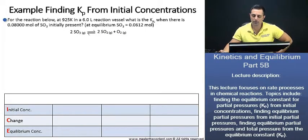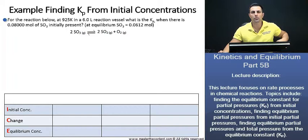Your career, our passion. In this reaction at 925 Kelvin in a 6-liter reaction vessel, what is the equilibrium constant for partial pressures when there is 0.08 moles of sulfur trioxide initially present? At equilibrium, the sulfur trioxide amount is 0.0612 moles.